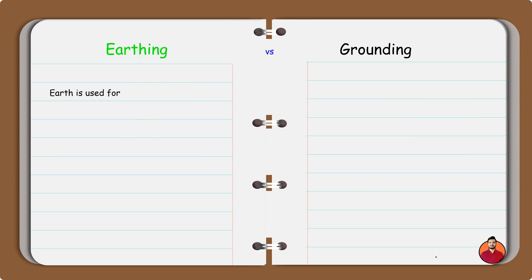Earth is used for the protection of the human body in faulty conditions. Grounding is primarily used for unbalancing when the electric system overloads.